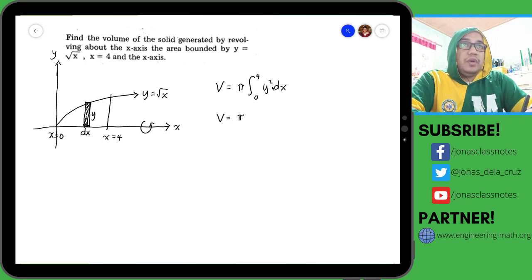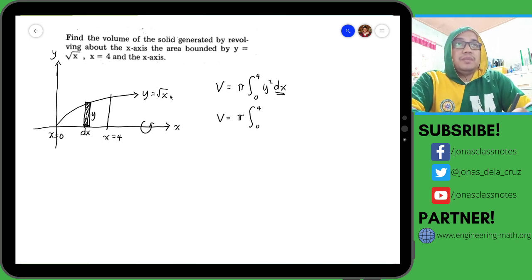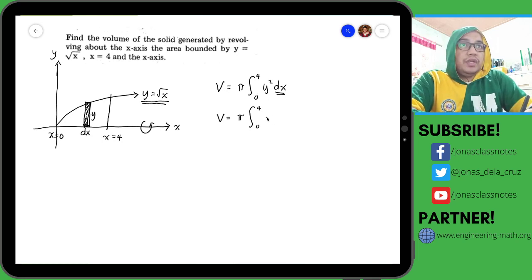So π integral y squared dx. Since dx is our variable of integration, we need to replace y squared in terms of x. To do that, we use our equation - this is basically square root of x squared, so that is x.